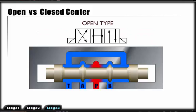This open-type configuration connects P, T, A, and B together, giving us an open center and work ports that drain to the tank. This configuration is often used in motor circuits to allow freewheeling in neutral.